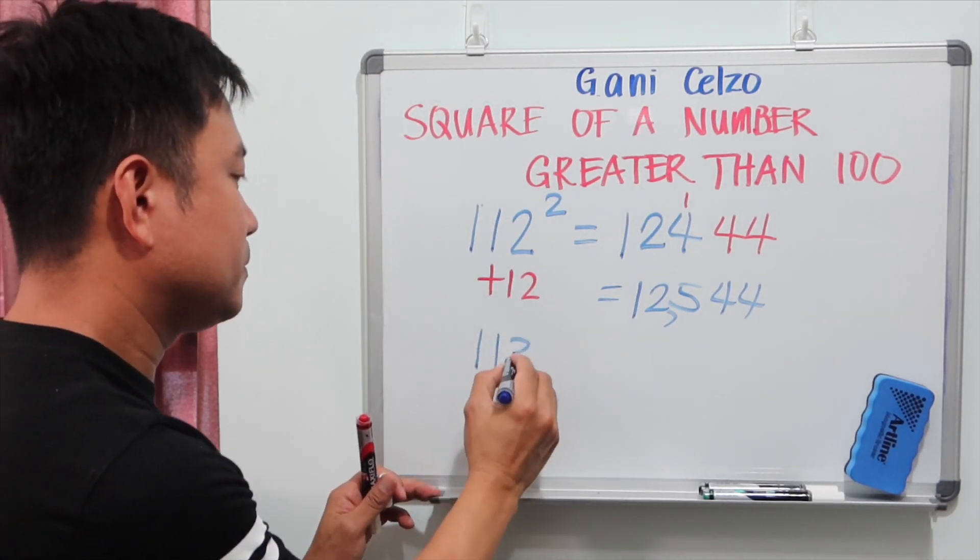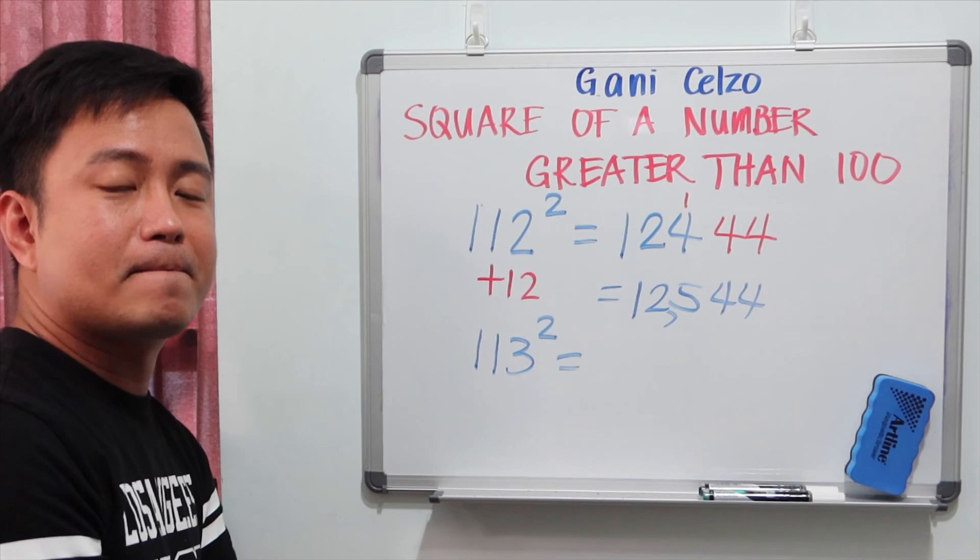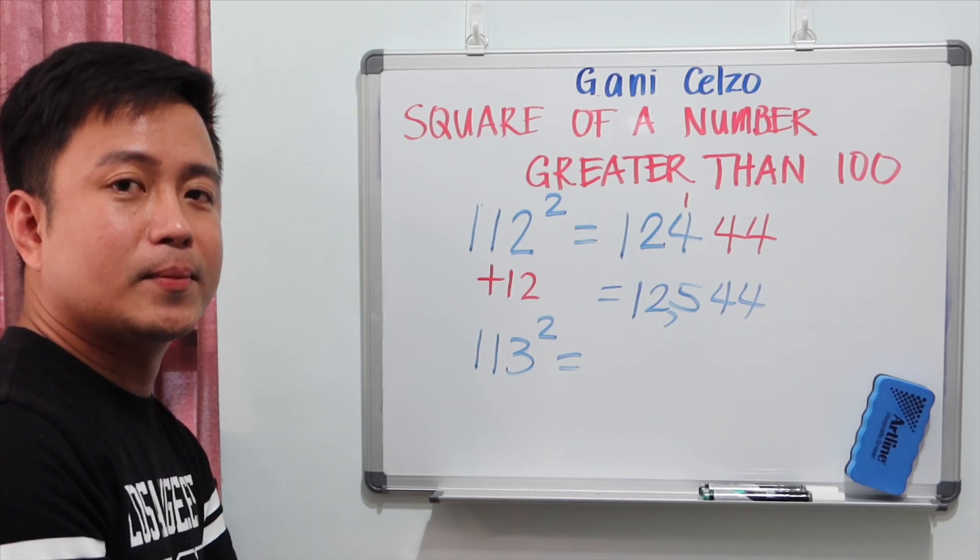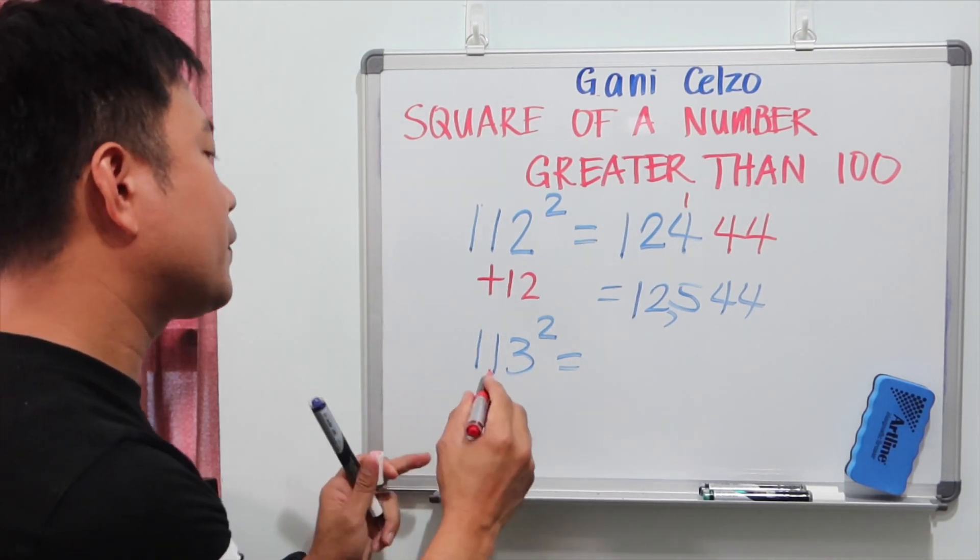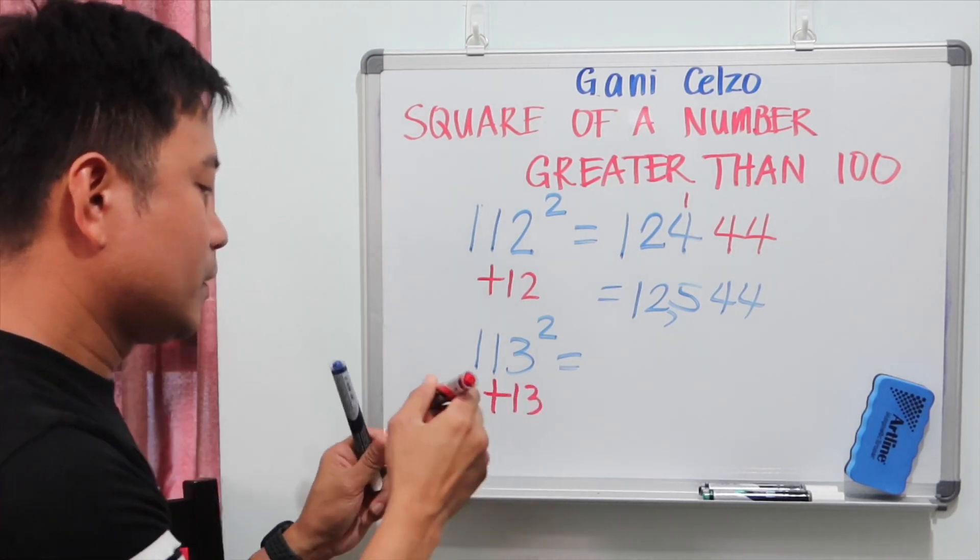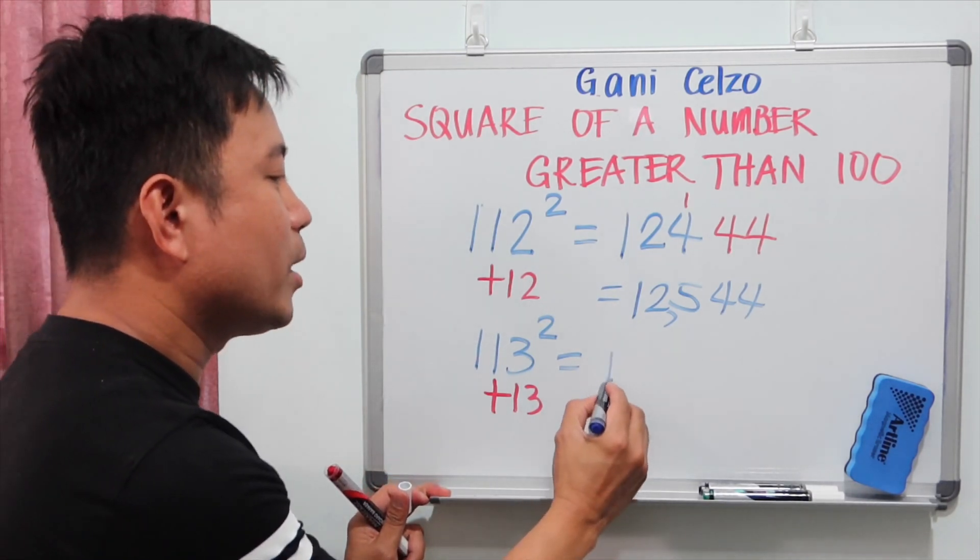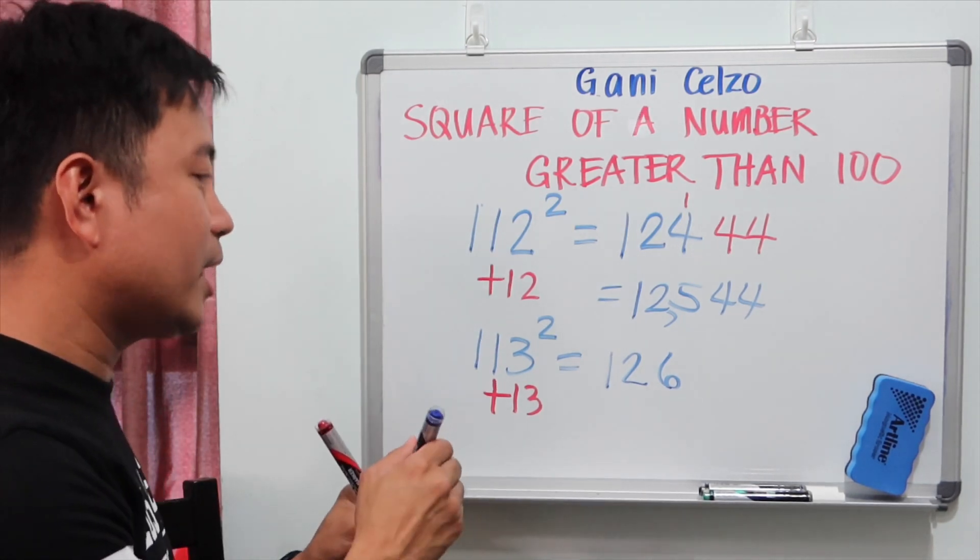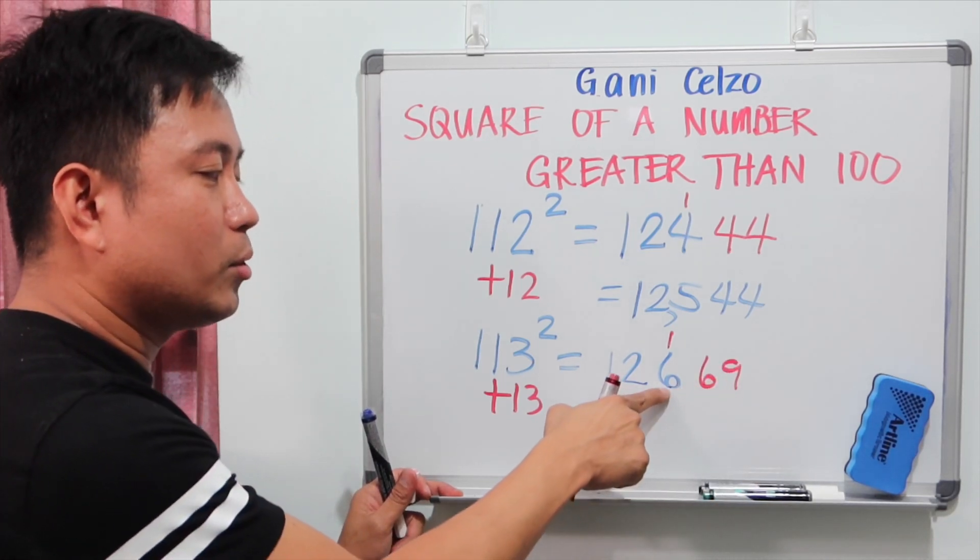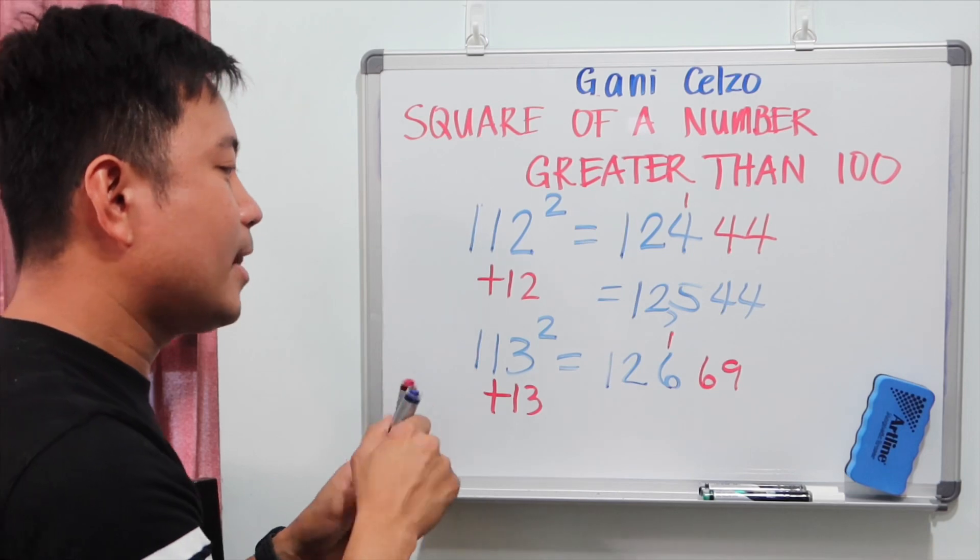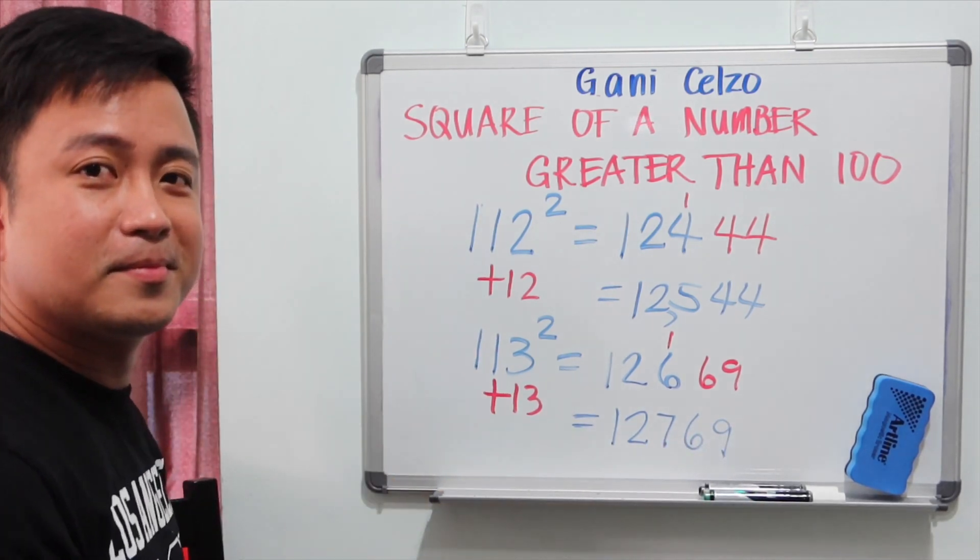Try 113 square. 5 seconds. So the same thing, this is 13 more than 100. So we add 13, which is 126. So we have 126. 13 square is 169. I'm going to put 169. So that means we need to add 1 to 126. So the final answer is 12,769. You got it?